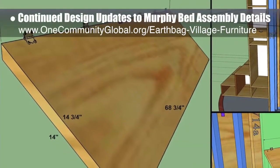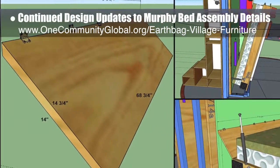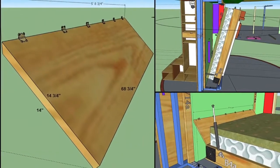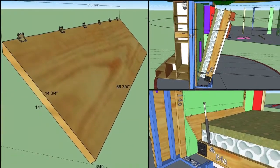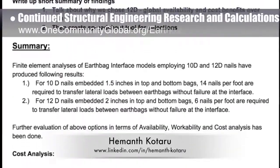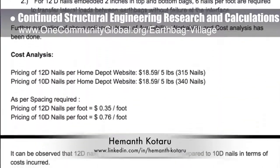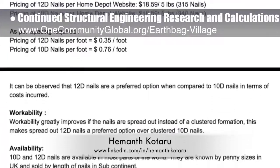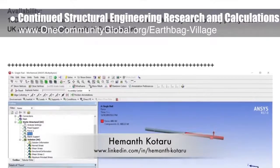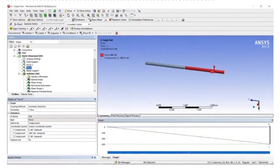This week we confirmed bed swing clearance, checked dimensions of parts O, WT28, and WT17, and added a headboard option. Heymanth Kotaru, structural engineer, completed his 29th week helping with structural engineering research and calculations for the EarthBank village. This week, he finished the initial cost analysis and summary for why we chose 12D nails.